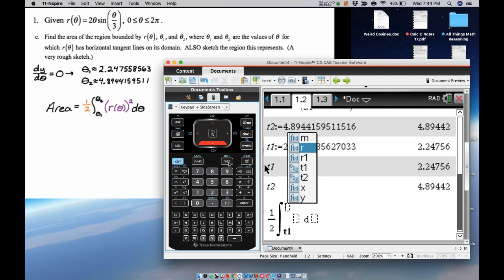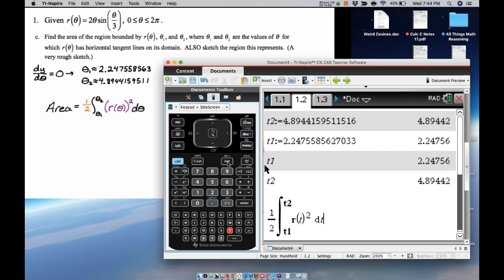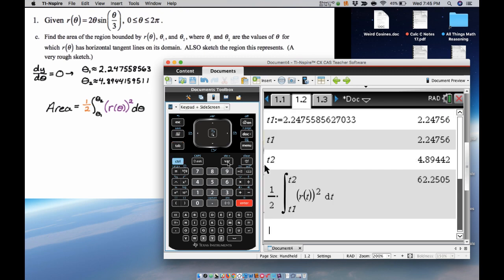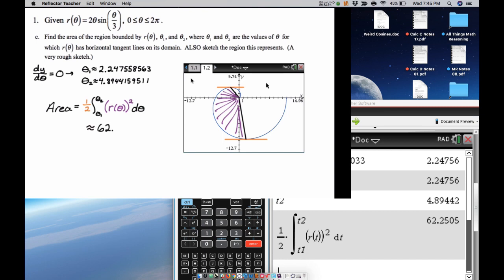So I'm going to do 1/2 the integral from t1 to t2 of our function, which is r(t) squared, dt. And we get approximately 62.251. Okay, so this is getting a little long, and we're about to move on to question number two. So I'm going to cut this video here and pick up in another video. I hope you found this helpful so far, and good luck, and I'll be back in the next video.